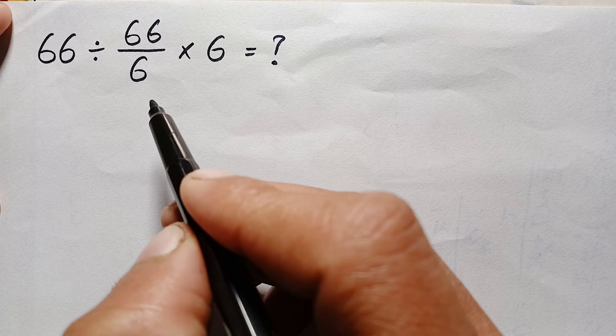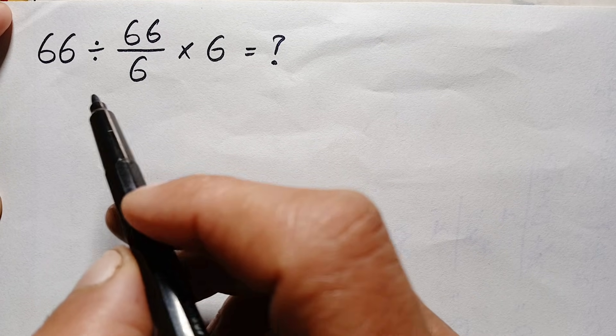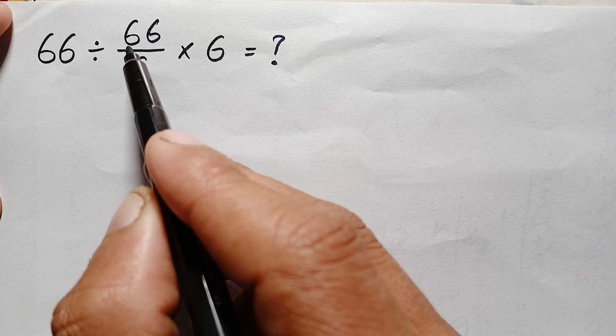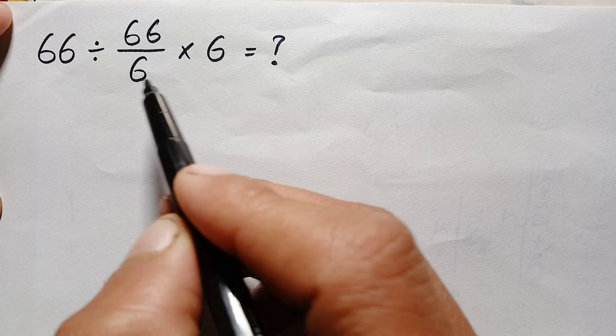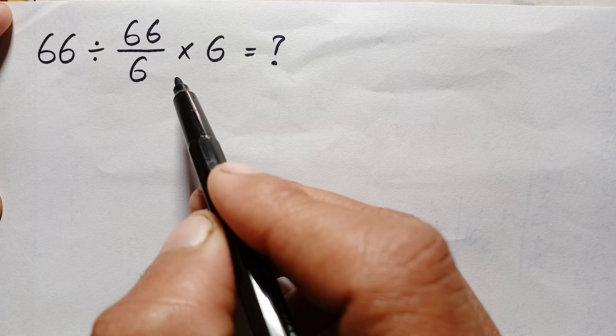Hello everyone, you are welcome. What is the correct answer of 66 divided by 66 by 6 times 6? Looking at the problem here, we have two operations: division and multiplication.